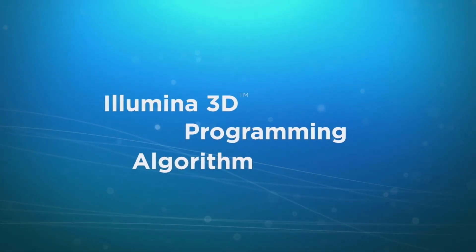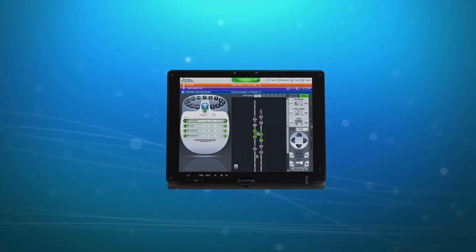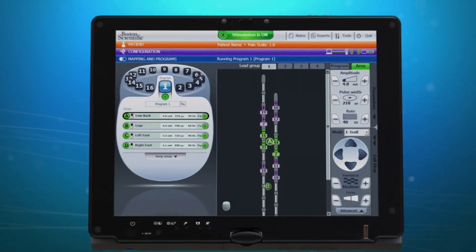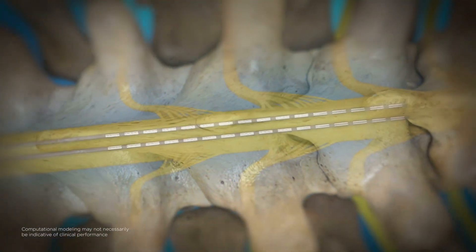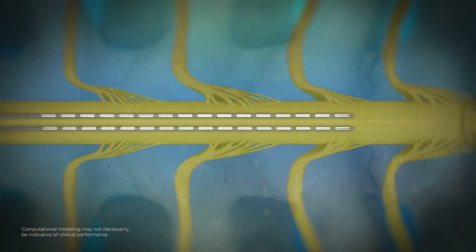Leads exist in a complex three-dimensional environment and the Illumina 3D programming algorithm takes this into account by using the lead positions from the fluorosync interface as three-dimensional inputs when creating the stimulation field.